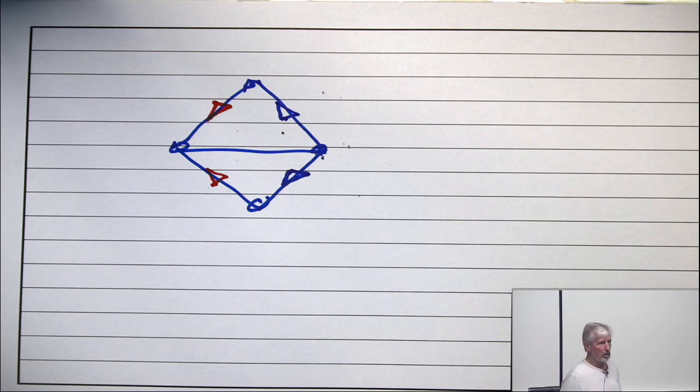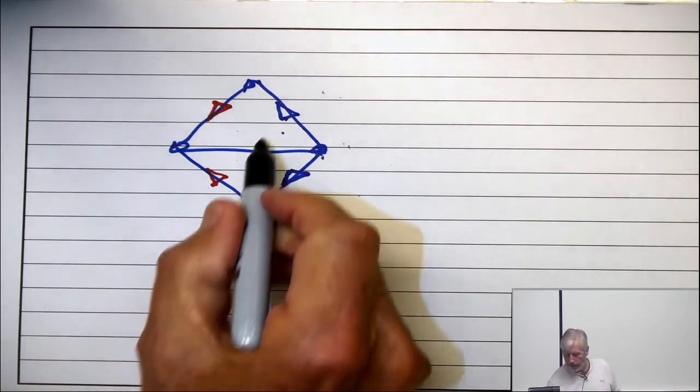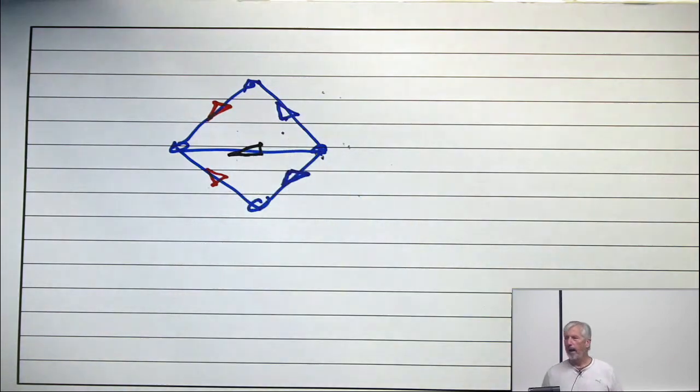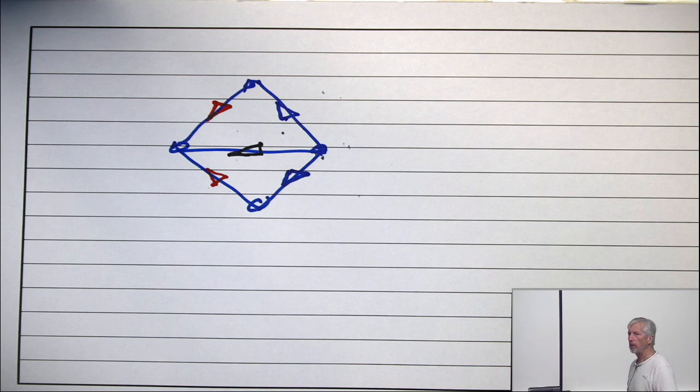No. So continue. Pick any unoriented edge. There's only one. Choose a direction for it. Your choice. Left to right or right to left? Doesn't matter. I'll do right to left. But, voila, there is a transitive orientation of the graph, witnessing that the graph is a comparability graph.